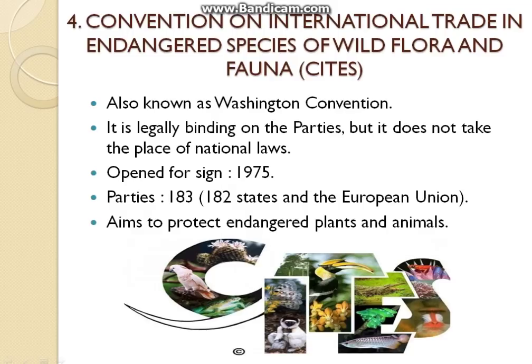The fourth one is CITES — Convention on International Trade in Endangered Species of Wild Flora and Fauna, also known as the Washington Convention. It is legally binding on parties but does not replace national laws. It was open for signature in 1975. 182 states and the European Union are parties to this convention, and its aim is to protect endangered plants and animals.